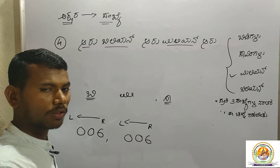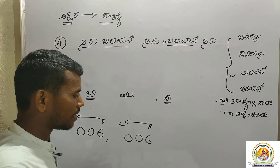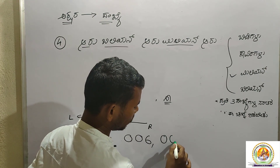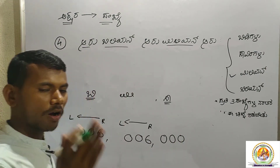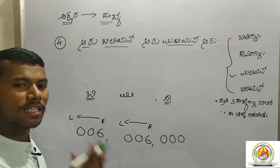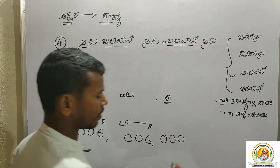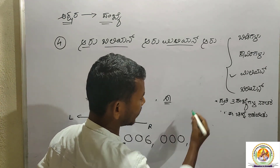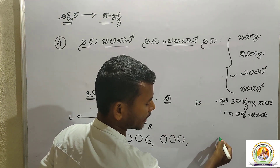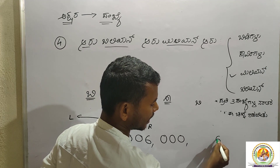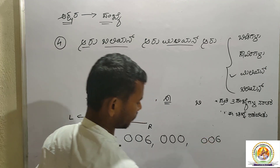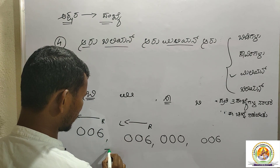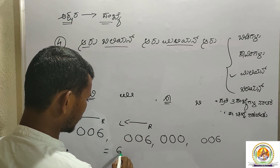S box: 3, 0, 1, 2, 3. S box, S thanagalit: 0, 0, 0, 6, 6, 0, 0, 0, 6.